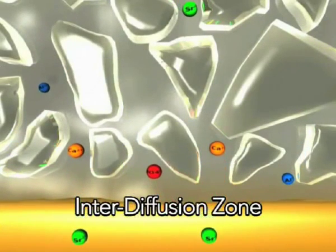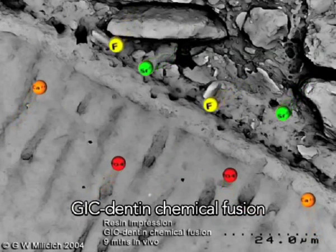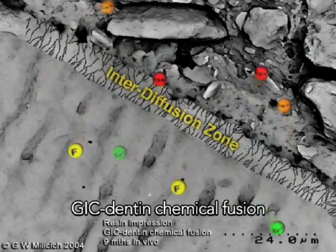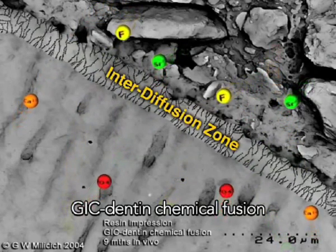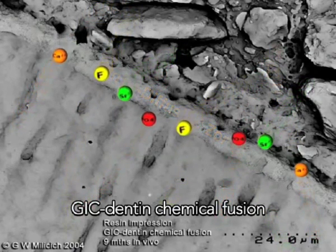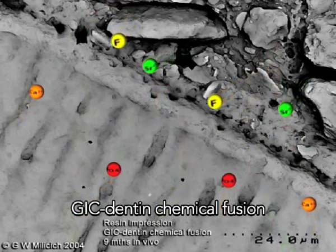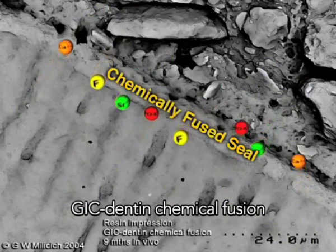This zone is stronger and more acid-resistant than either the glass ionomer or the tooth. The combination of the interdiffusion zone and the chemical bonding provides the basis for a strong, stable adhesive interface, and creates a bacteria-proof seal for the cavity, best described as a chemically fused seal.